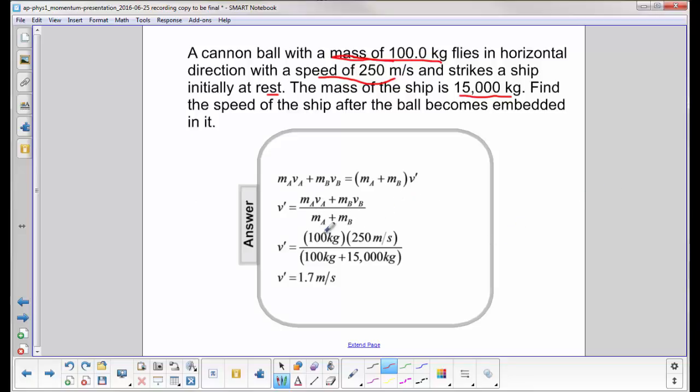And then I can plug in the numbers here, substitute the numbers into the equation, do the division and addition, and I get the final velocity of the combined ship cannonball system is 1.7 meters per second.